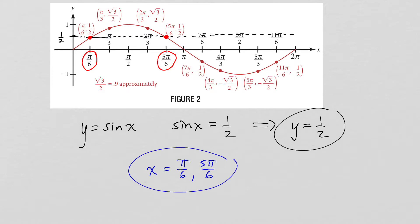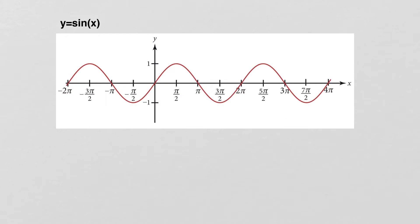Please understand that these are just the values between 0 and 2 pi. If we extend this graph beyond 2 pi, there would be many other values of x that would also have a sine value equal to 1/2. This is an extension of the sine graph — if I draw a horizontal line at y equals 1/2 and extend it in both directions, you can see there are many times it intersects the curve. In this picture, you can see six such instances.